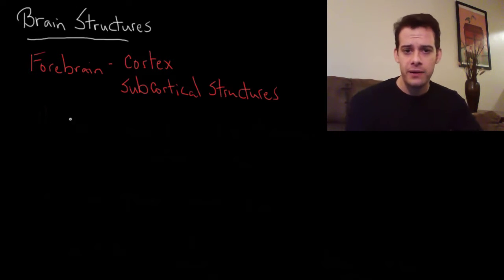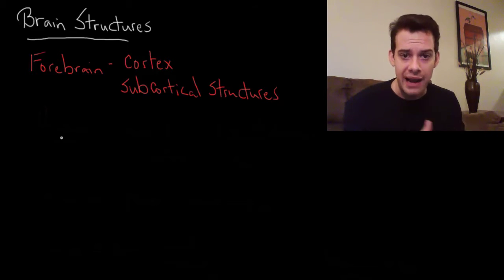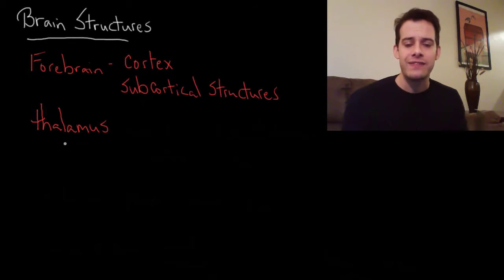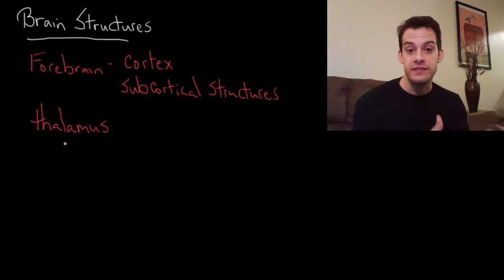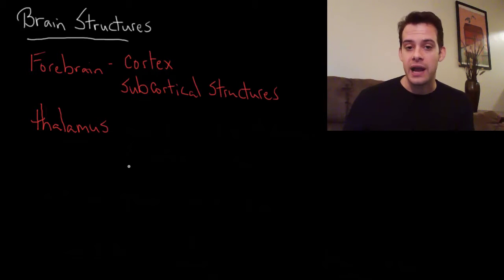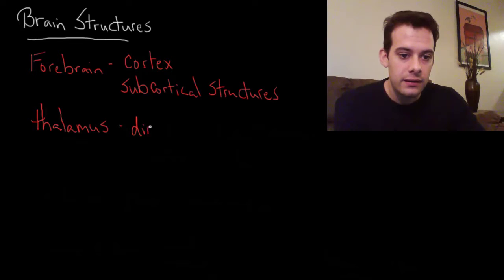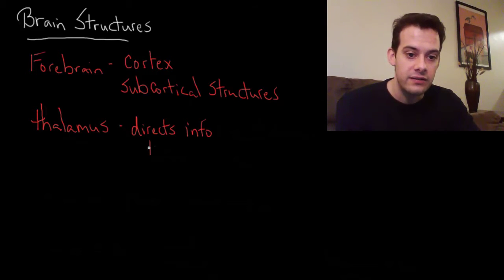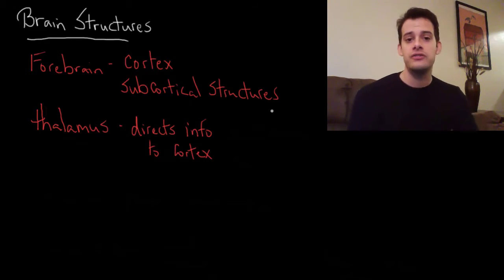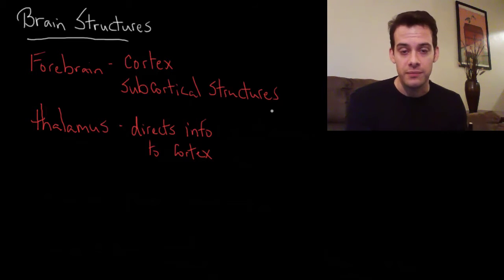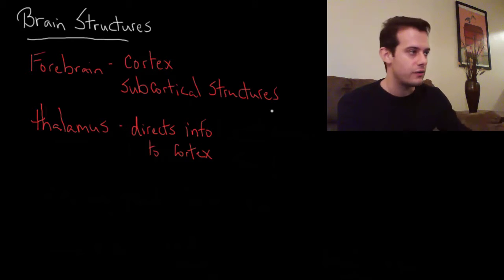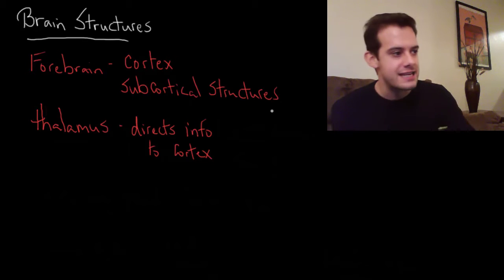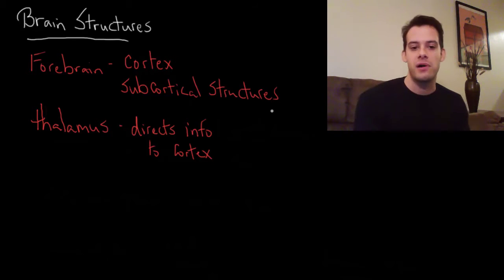If you remember from the last video, we were moving up the midbrain and got to the area where it starts to branch off in two directions. The first structure of the forebrain is the thalamus — two egg-shaped structures on either side coming off of the midbrain. The thalamus helps to direct information to the appropriate area of the cortex. You can think of it like an old switchboard operator: information comes up the brain stem, gets to the thalamus, and the thalamus directs it to the right part of the cortex.